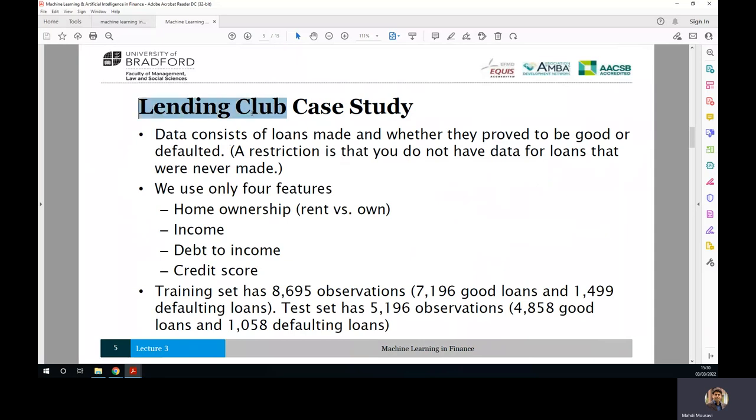We don't have information about the loans which are not made. We have information about the loans that are made. In other words, those who are working in Lending Club actually have got a filter at the beginning to reject the request or application for the loan of those customers which they think that they are not going to pay back. So we are not talking about the whole population, we are just talking about those who are granted loan.